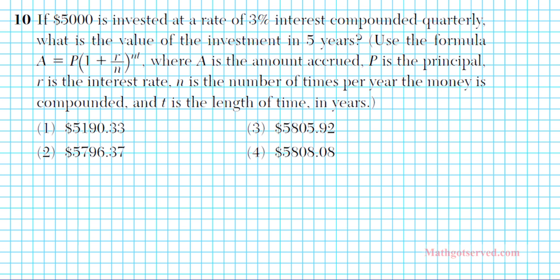Let's take a look at problem number 10, the last example in this installment. It says: if $5,000 is invested at a rate of 3% interest compounded quarterly, what is the value of the investment in 5 years? Use the formula A equals P times 1 plus r over n, raised to the nt, where A is the amount accrued, P is the principal, r is the interest rate, n is the number of times per year the money is compounded, and t is the length of time in years. Three things to keep in mind: the meaning of the compounded period, expressing percent in mathematical form, and entering the expression correctly in your calculator.